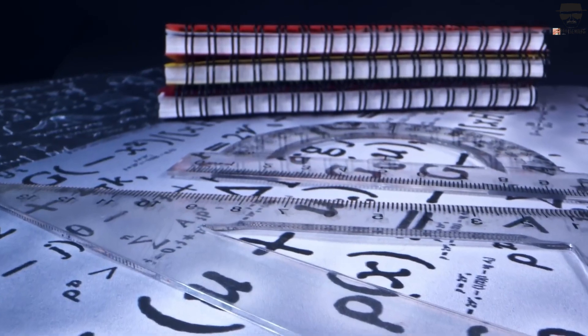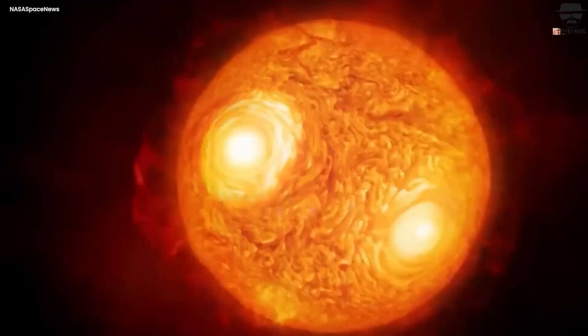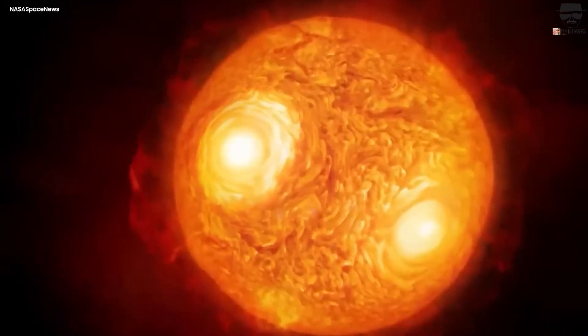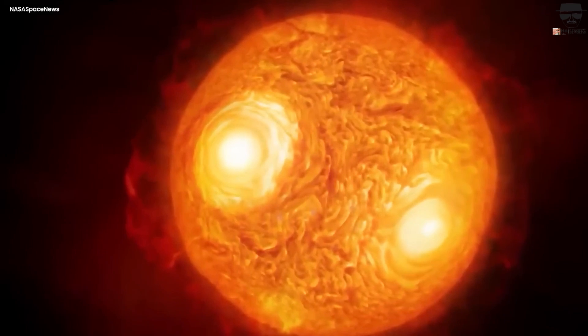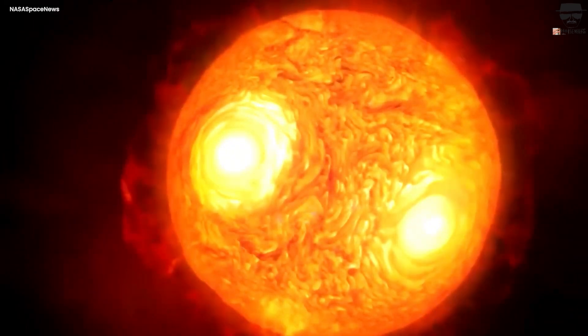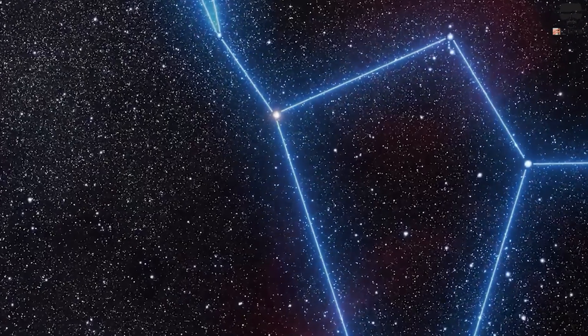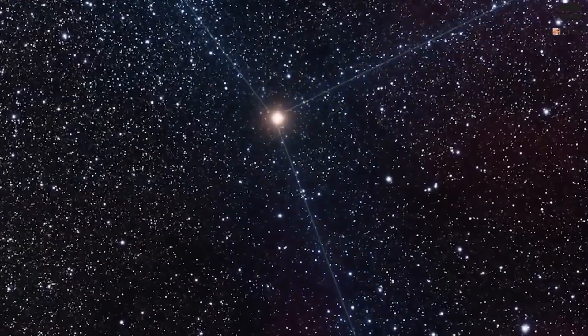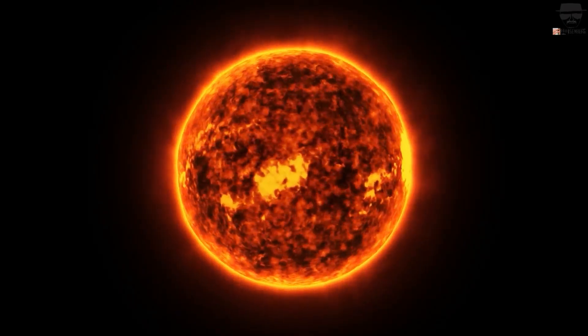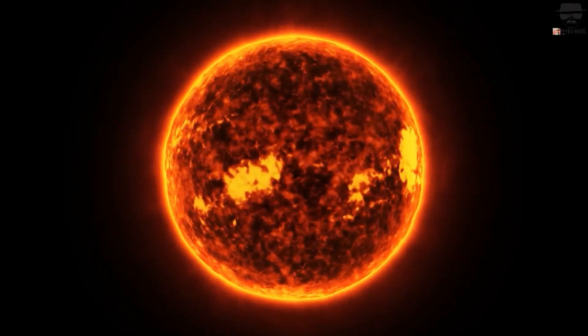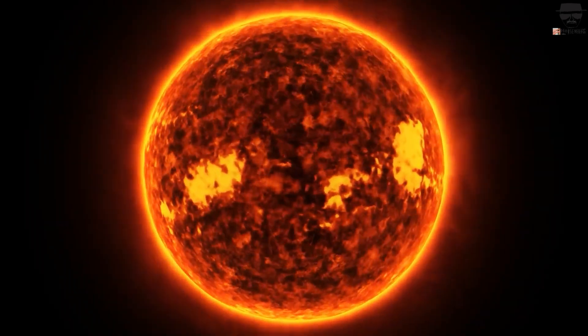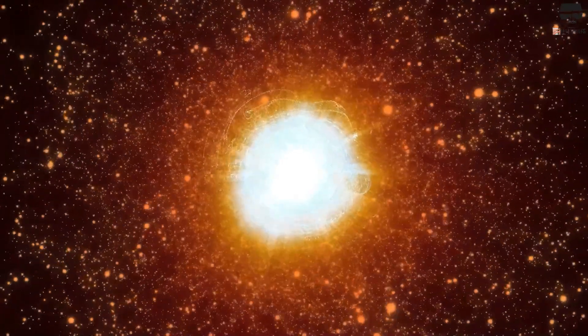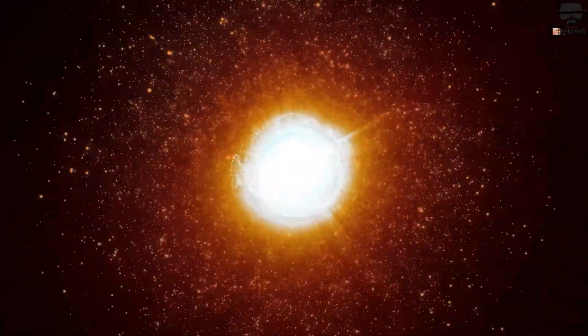A supernova is when a star explodes with a lot of light. It can happen when a white dwarf is set off into runaway nuclear fusion or when a huge star is nearing the end of its life cycle. Either the first object, which is called the progenitor, falls apart into a neutron star or black hole, or it is destroyed and turns into a scattered nebula. A supernova can have a visual brightness peak that is about the same as a whole galaxy. After a few weeks or months, this brightness starts to fade.